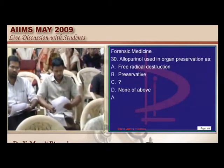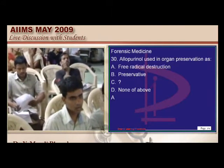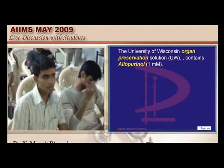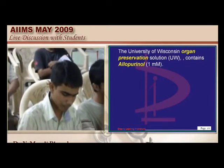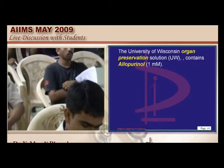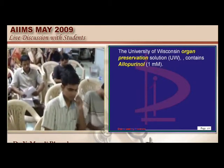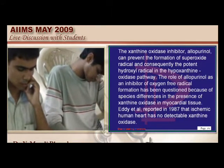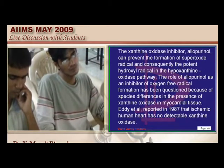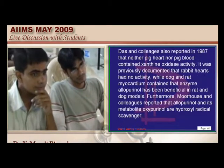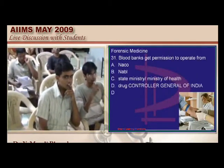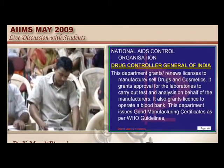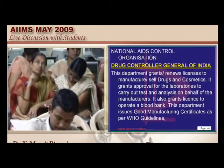Allopurinol is used as a preservative in organ transplantation. The University of Wisconsin organ preservation solution contains allopurinol. Allopurinol, being a xanthine oxidase inhibitor, prevents free radical injury from happening — that is why we use it to prevent free radical destruction. Blood banks should take permission from the Drug Controller of India, who also gives permission for manufacturing drugs.